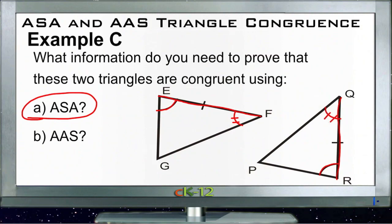Now in order to use angle angle side, we have to have sort of two angles in a row, and then a side outside of it. So since again, we know that E and R are congruent angles, and that QR and EF are congruent sides, we need to know in this case that G is congruent to P. If G were congruent to P, then we could say that angle angle side showed us that our two triangles were congruent.